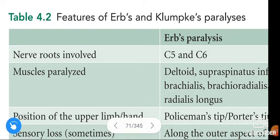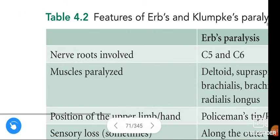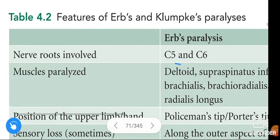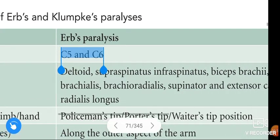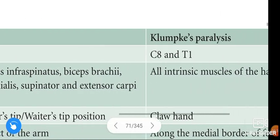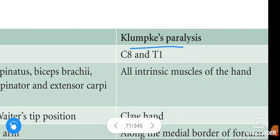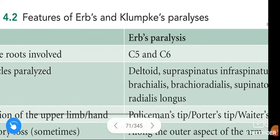The nerve roots involved in Erb's Paralysis are C5 and C6. The nerve roots involved in Klumpke's Paralysis are C8 and T1.